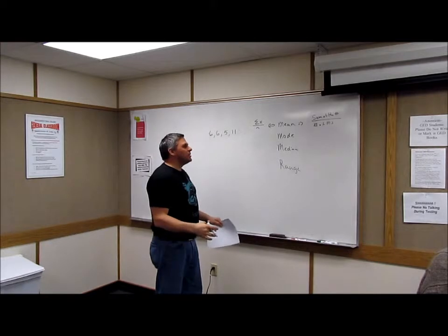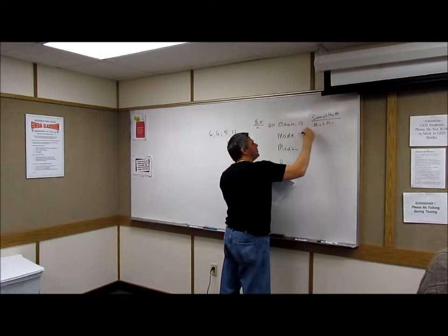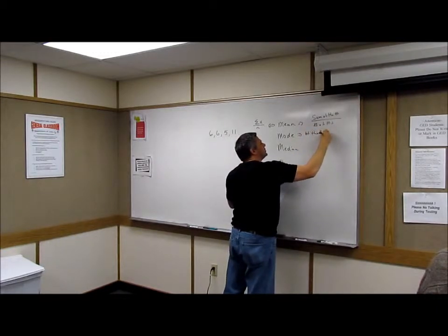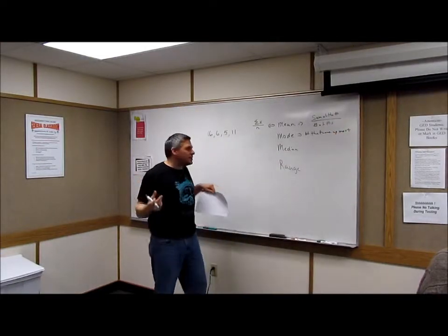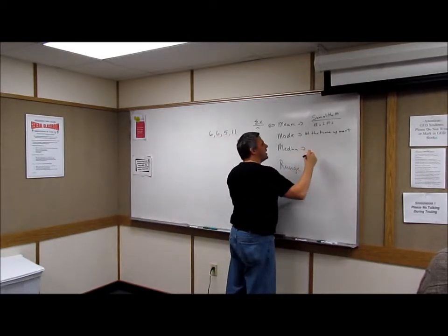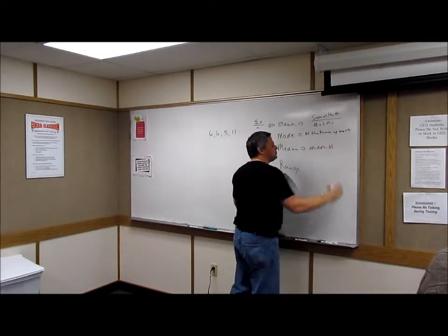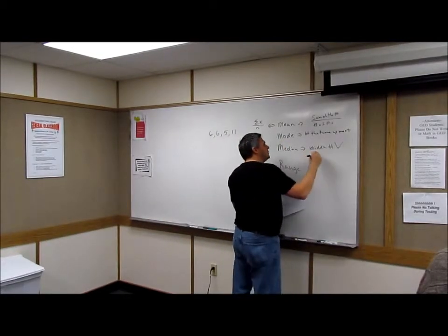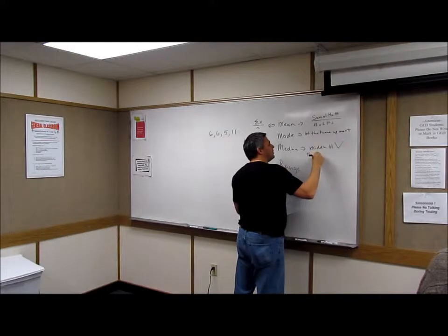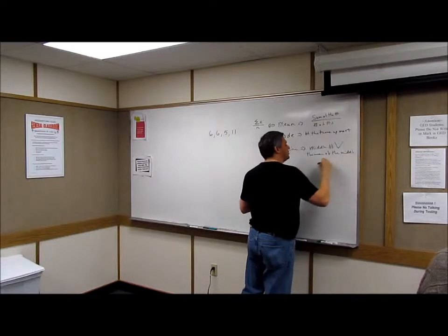What is the mode? Well, the mode implies the number that comes up most. The median implies the middle number, or the mean of the middle two numbers.